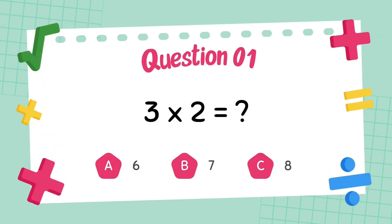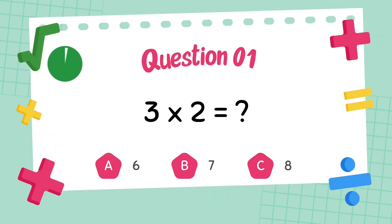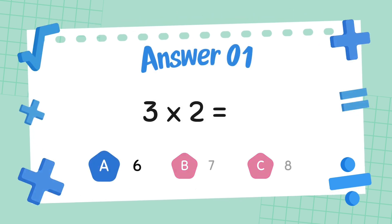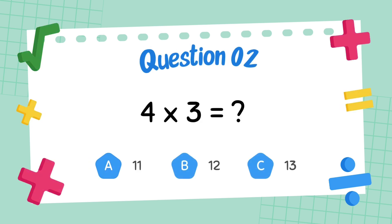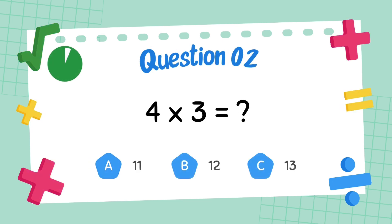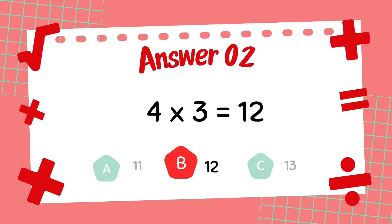What is 3 multiply 2? The answer is 6. What is 4 multiply 3? The answer is 12.